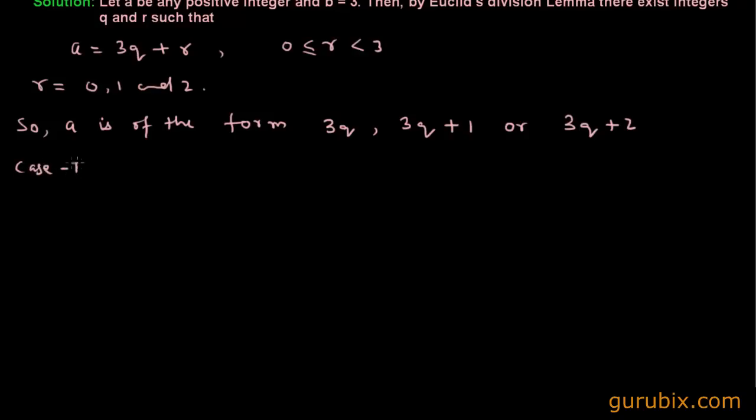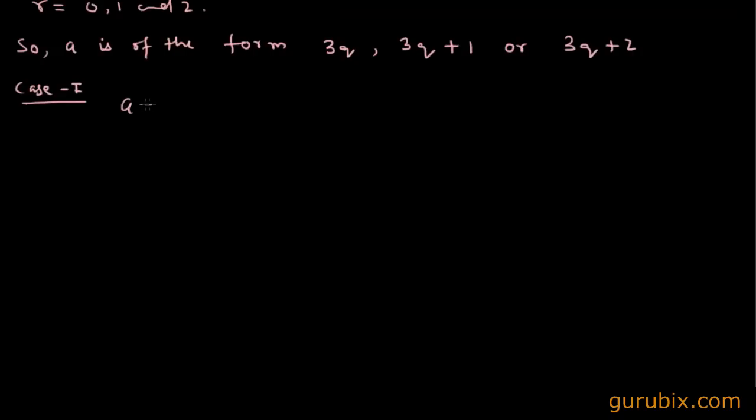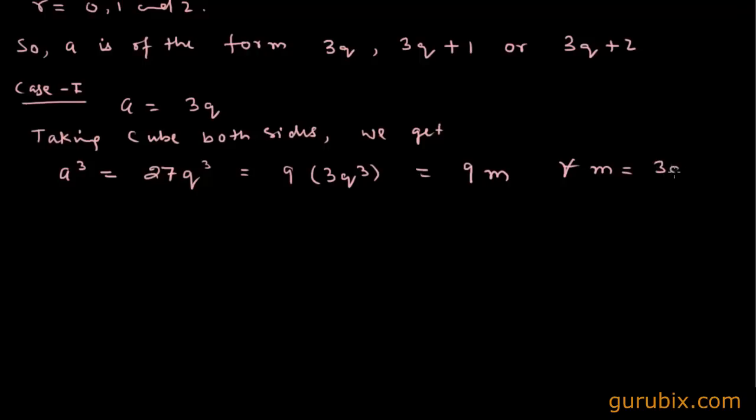Case 1, when a equals 3q. Taking cube both sides, we get a cube equals 27q cube. We can write it as 9 into 3q cube. And we can put m in the place of 3q cube. So we get 9m for all m equals 3q cube. And that is what we want to find out.